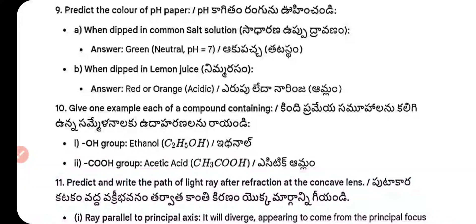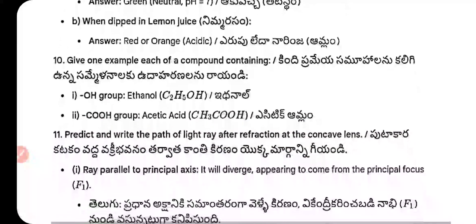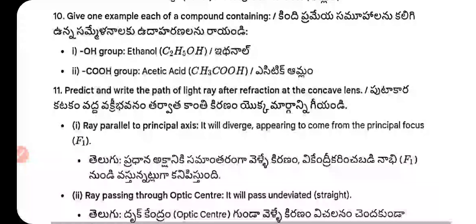Question 9 — pH paper in common salt solution: green (neutral, pH = 7). pH paper in lemon juice: red or orange (acidic). Question 10 — Compound with OH group: ethanol (C₂H₅OH). Compound with acidic group: acetic acid (CH₃COOH).